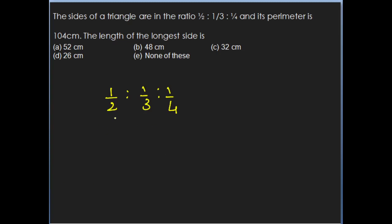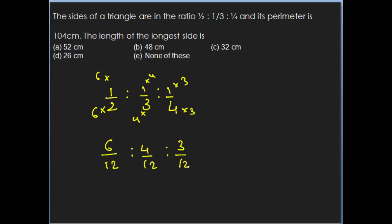The LCM of 2, 3, and 4 is 12. So we make the denominators 12. To make the first denominator 12, multiply by 6; for the second, multiply by 4; for the third, multiply by 3. Therefore the new ratio is 6/12 is to 4/12 is to 3/12. Eliminating 12, the ratio is 6 is to 4 is to 3.